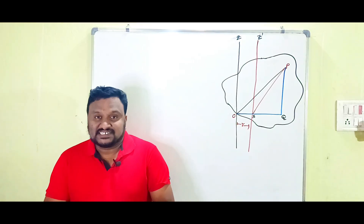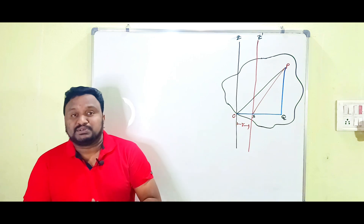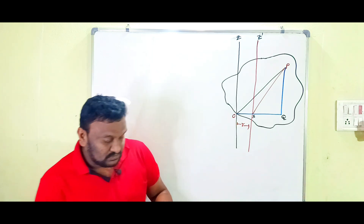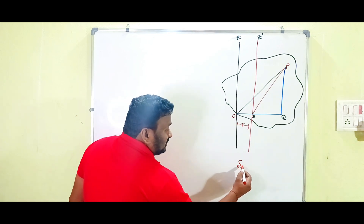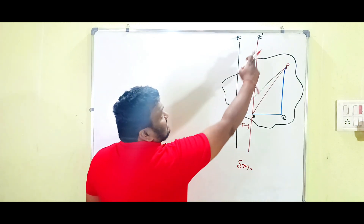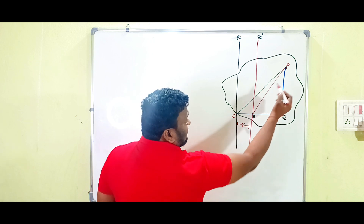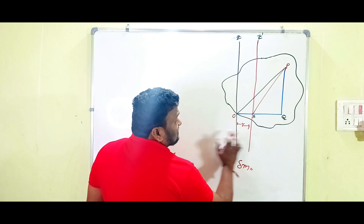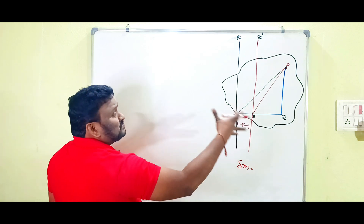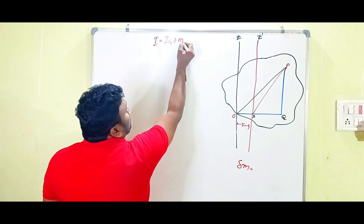Now we have to prove the parallel axis theorem. First, clearly understand the diagram. At point P there is one particle having mass δM. This is the first axis and the second axis passes through the center of mass. R is the distance between the two parallel axes Z and Z-dash. Both Z and Z-dash are parallel — that is why it is known as the parallel axis theorem. We have to prove that I = Ig + MR².